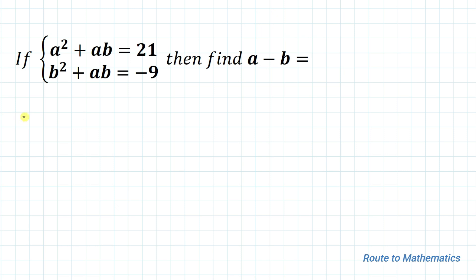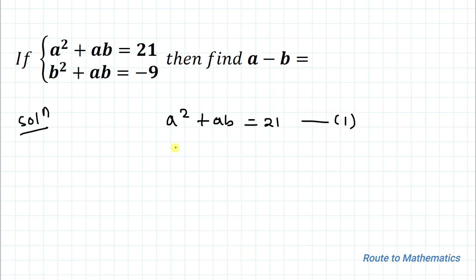Without any delay, let's start the solution. Our first equation is a² + ab = 21 — let's call it equation 1. Our second equation is b² + ab = -9 — that is equation 2.